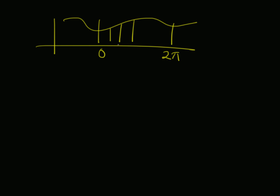The interval from 0 to 2π is sampled at discrete locations, and the gap between two consecutive samples is given by Δω = 2π/N. Now the question is: what is the right value of N to recover the original sequence x(n)? To understand that, let us look at the sampled signal X(2πk/N).